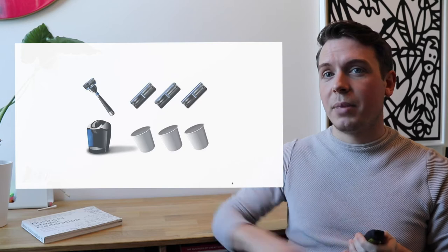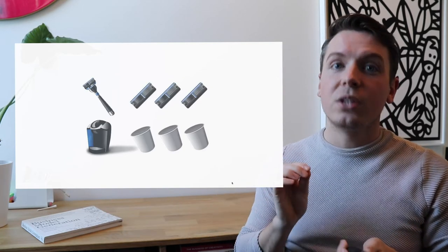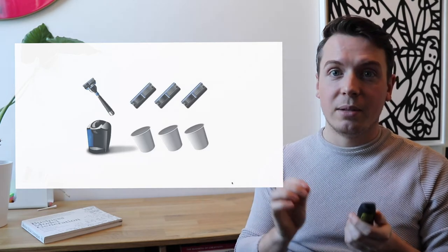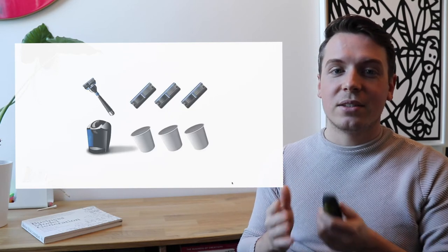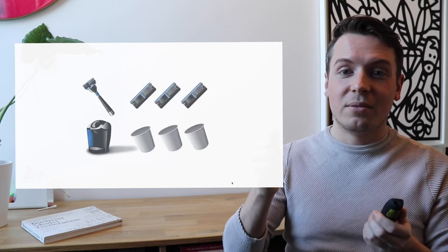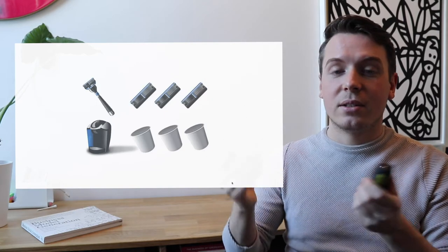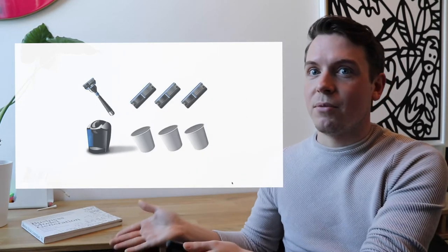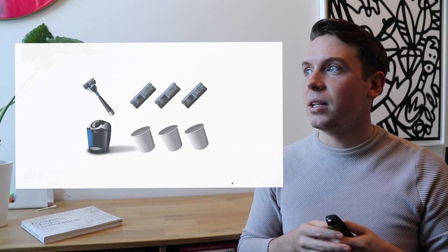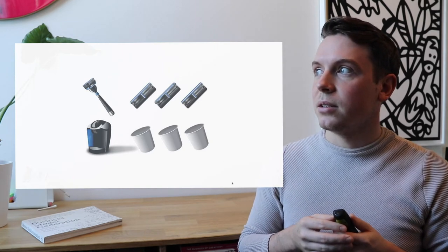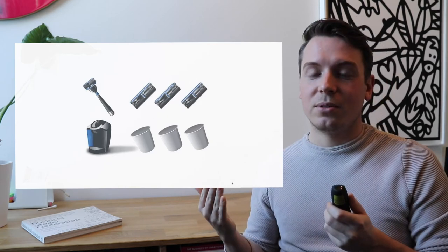One of the business model patterns described in Business Model Generation is the razor blade model, sometimes called the bait and hook model. This is where you buy, for instance, a razor blade handle, but you have to keep buying the razors all the time because they run out. The same goes for a printer — there were instances where buying a new printer at MediaMarkt was sometimes cheaper than refilling your cartridges.